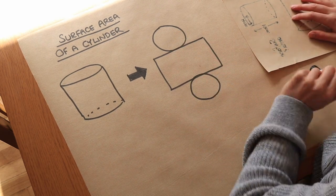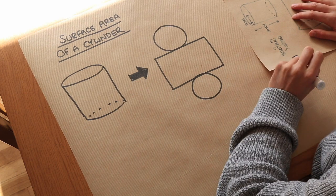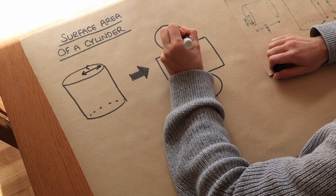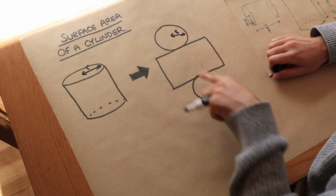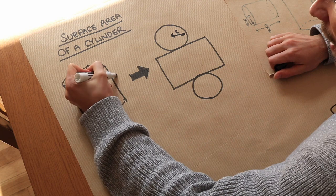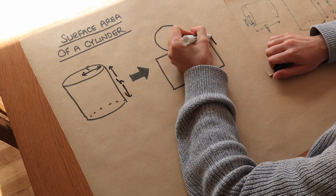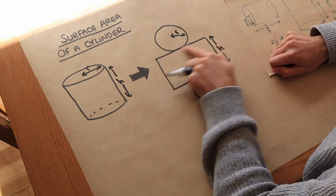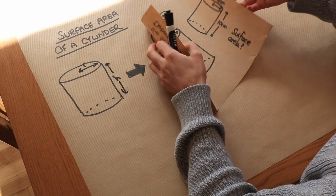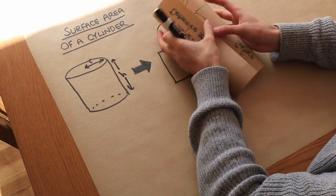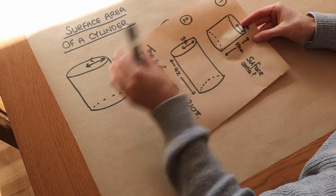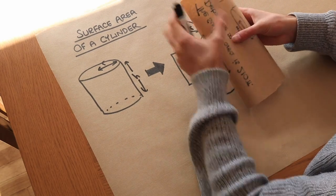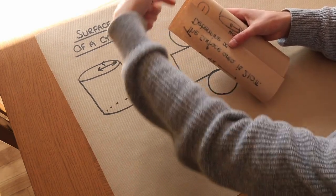How do we find the total area of this net to get the total surface area of the cylinder? This is the radius, which is also the radius of the circle. We've got two circles, and then we've got the height, which is the height of this rectangle in the net. The length of this rectangle is the same as the total circumference of the circle.